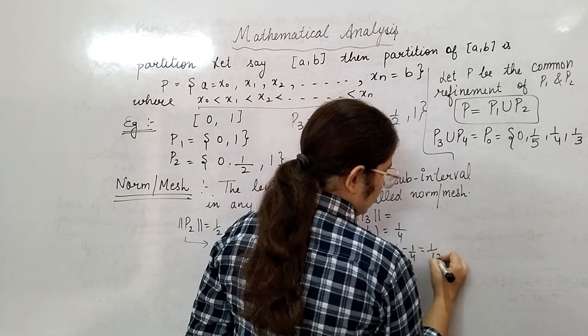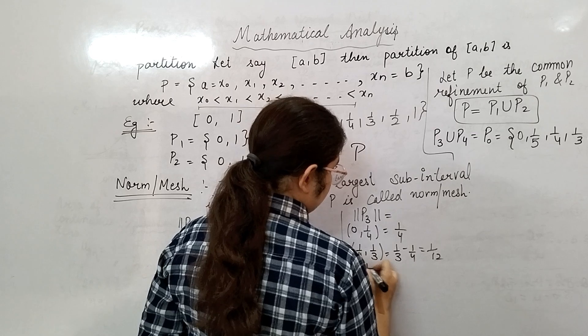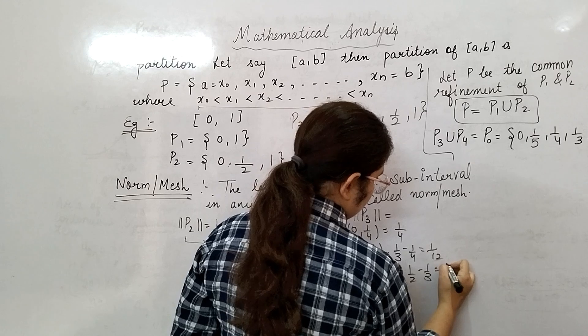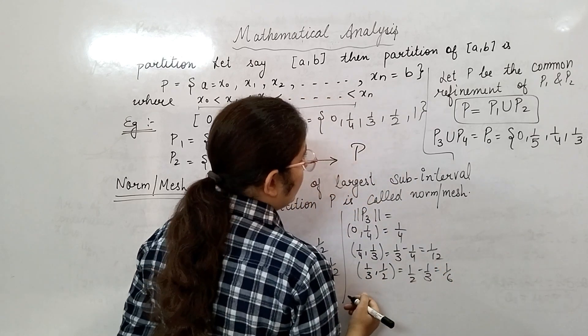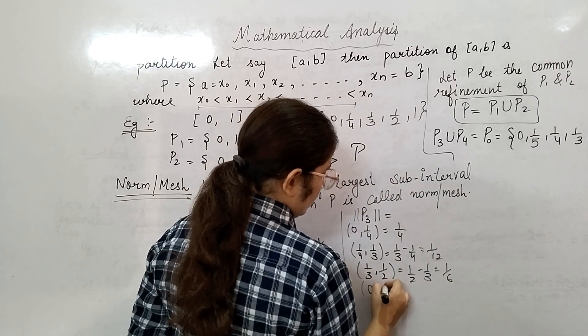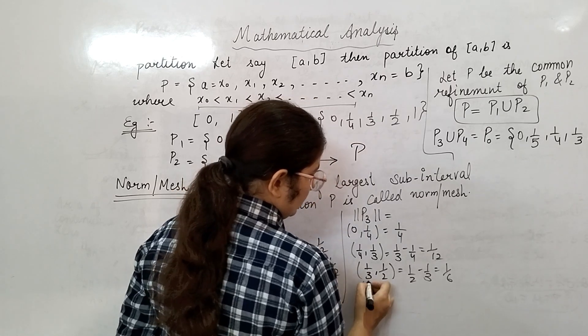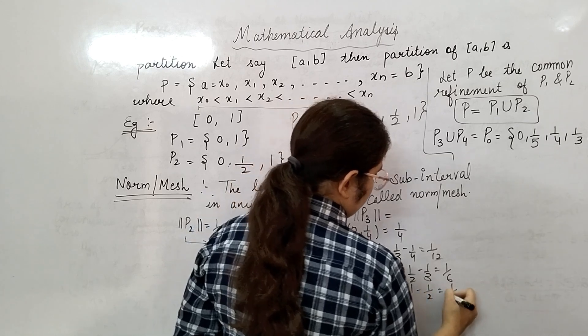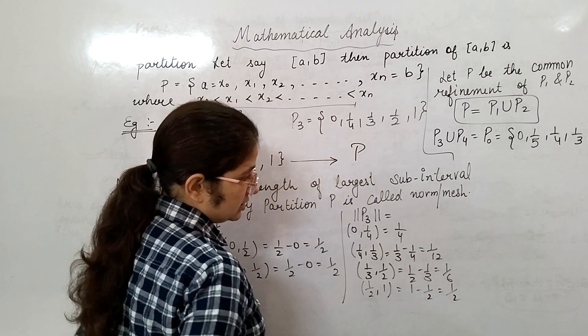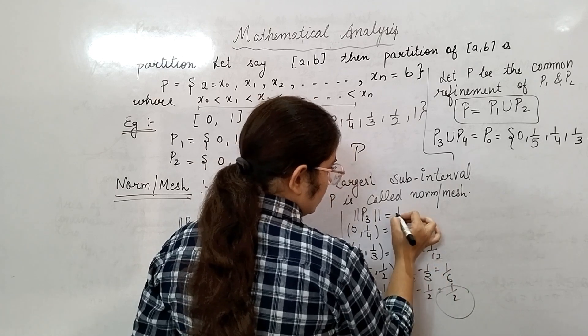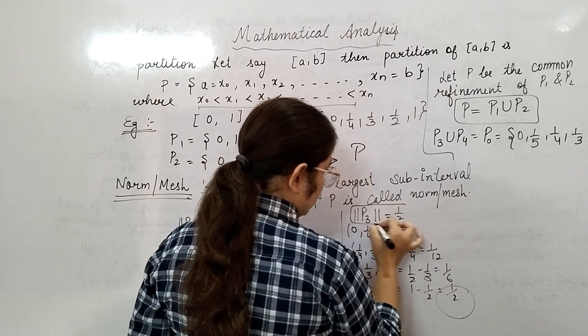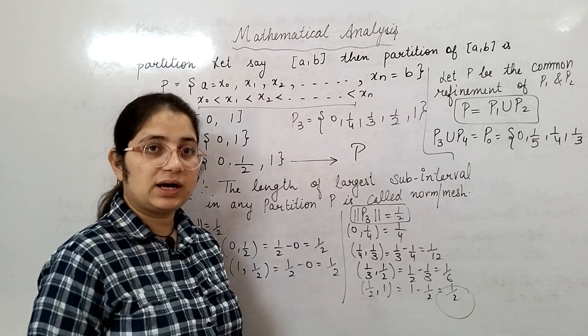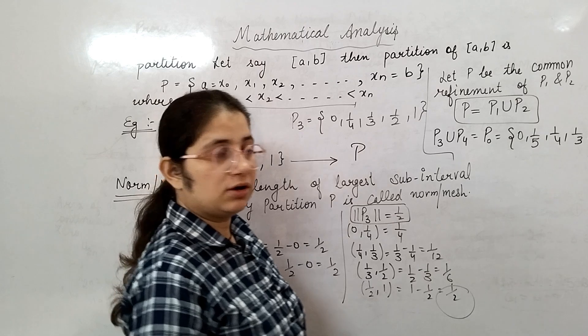and [1/2, 1] with length 1 - 1/2 = 1/2. Which one is the largest among these? 1/2 is the largest among these, so the norm of P₃ partition will be 1/2. So this is all about norm, common refinement, and refinement of partition P.